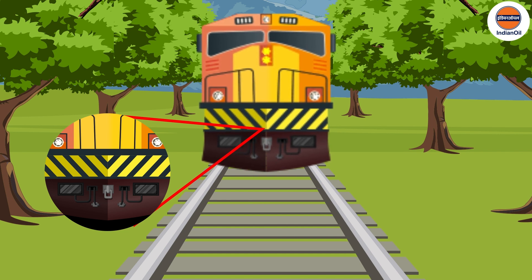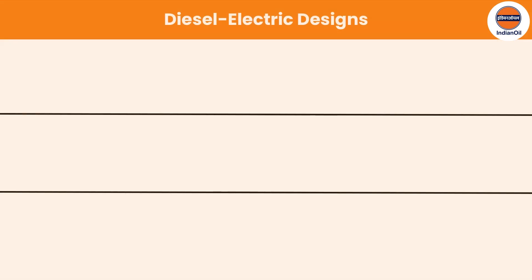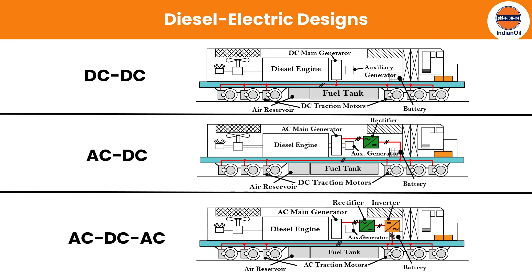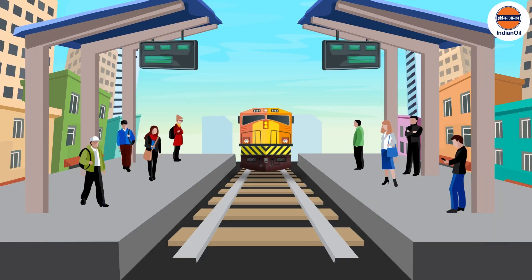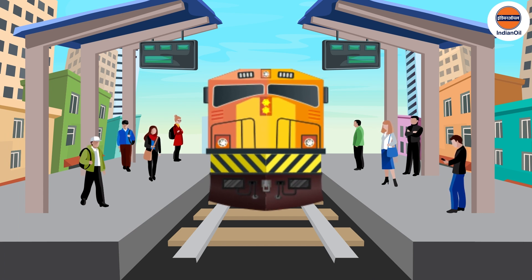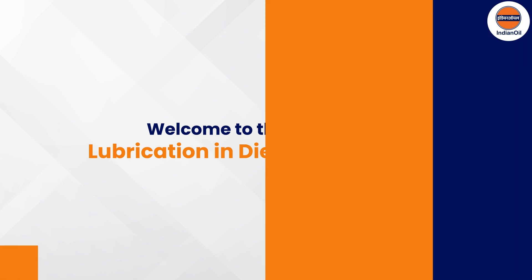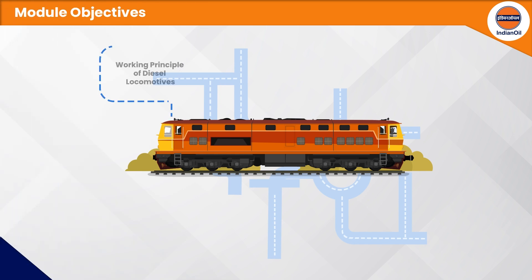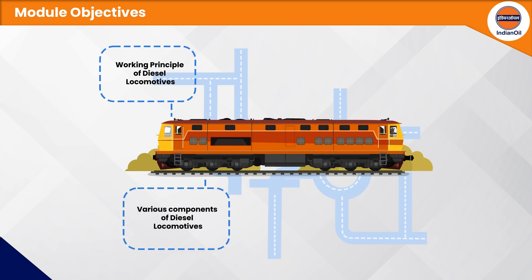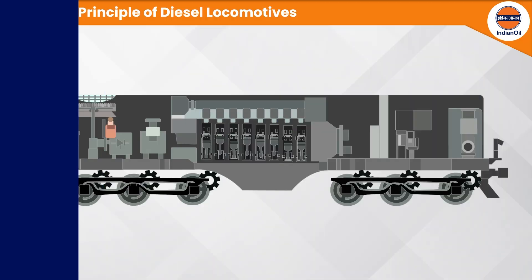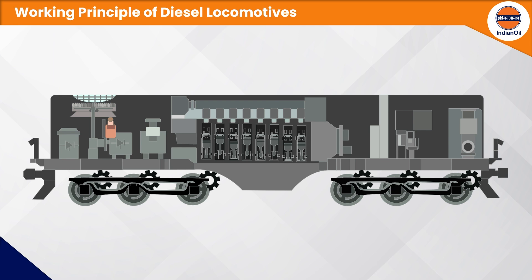Indian Railways began looking at various diesel electric designs like DC-DC type, AC-DC type, and AC-DC-AC type. In this module on lubrication in diesel locomotives, we will understand the working principle of diesel locomotives, various components of diesel locomotives, lubrication in diesel locomotives, and servo lubricants and greases used for lubrication.